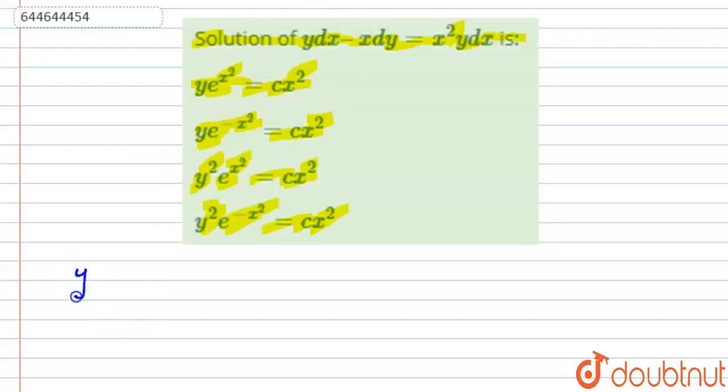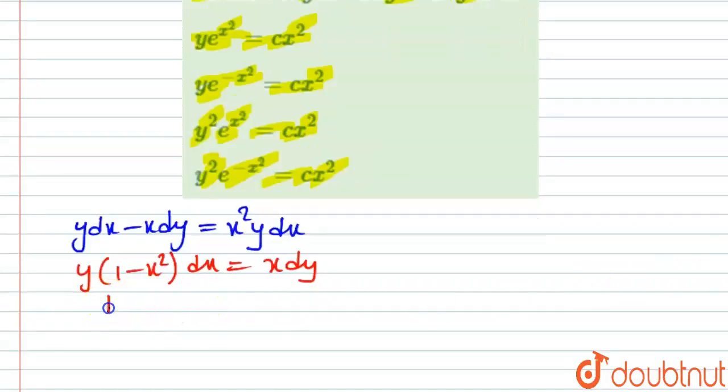Let us write this differential equation y dx minus x dy that is equal to x square y dx. Let us bring this here. Now, let us bring the x and y to the respective sides. This becomes 1 upon x minus x dx that is equal to 1 upon y of dy.